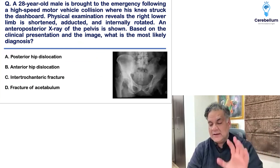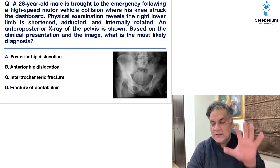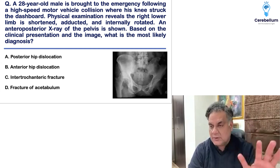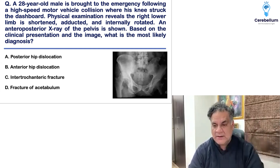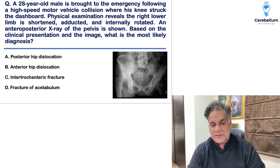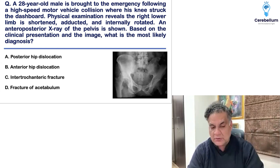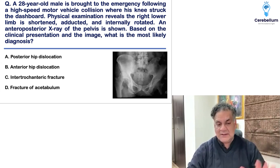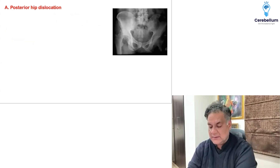The first question was universally discussed in our Telegram group — about a high-speed vehicle collision with dashboard injury. The moment you hear 'dashboard injury,' what should come to your brain is a posterior dislocation of the hip. They showed an image with the head above the acetabulum, with options including acetabular fractures, posterior hip dislocation, anterior hip dislocation, and intertrochanteric fracture.